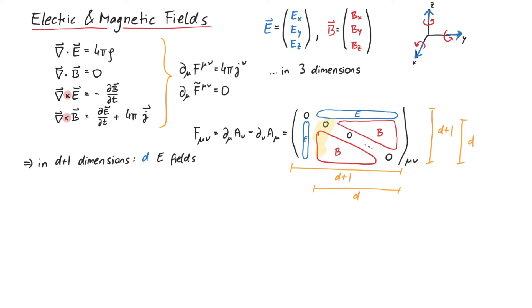So what about the B fields? In here, we have D times D entries. But we have to subtract D, since all diagonal entries are zero. And then, we divide by two, since the tensor is anti-symmetric. If we know the upper half, then we automatically know the lower half. This results in D times D minus one over two magnetic fields.